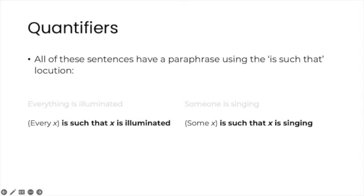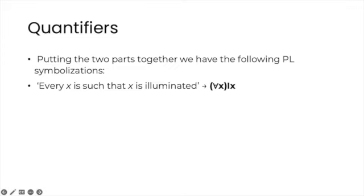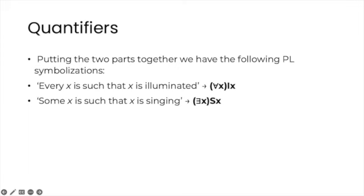So let's now turn to the second part of our paraphrase. In place of is-such-that-x is illuminated, we can simply write a predicate letter followed by a variable, such as ix. And is-such-that-x is singing can be replaced by sx. Putting the two parts together, we have the following PL symbolizations. So we saw how, by a series of steps, we can go from an idiomatic English sentence to a completely symbolic expression in PL. Soon you'll forget about all these intermediate steps, which were there just to help you make sense of the symbolization we are using, and you'll go from English to PL in a single bold step.